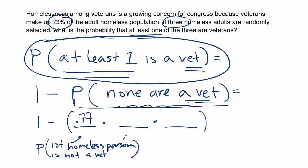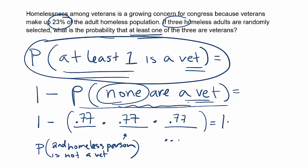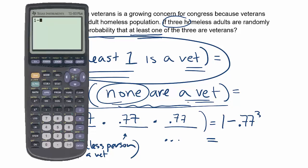For the next probability position, it's basically the same thing — it's the second homeless person, and we're looking for the probability they're not a vet, because we want none of these three to be vets. So we say 0.77 again, and likewise for the last one, it'll be 0.77. So to solve this problem, we have to do 1 minus 0.77 to the third power. Working that out, we get 1 minus 0.77 raised to the third power, and the answer is 0.543 to three decimal places.